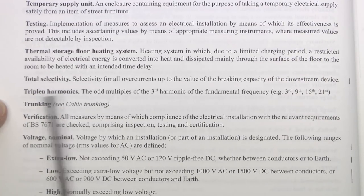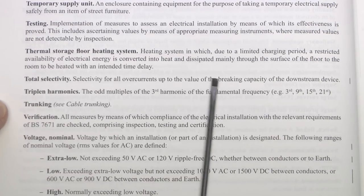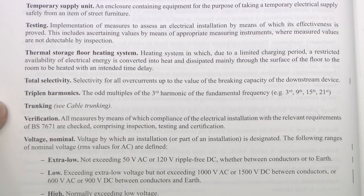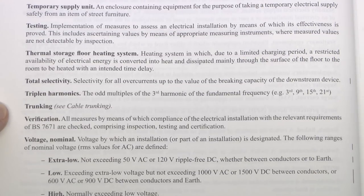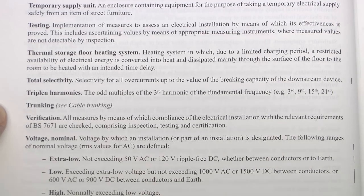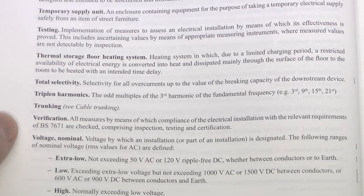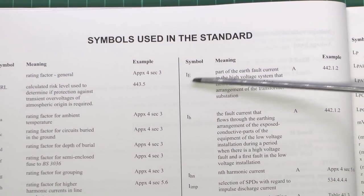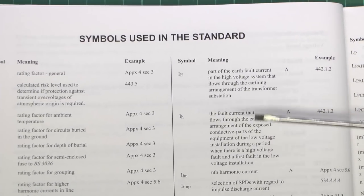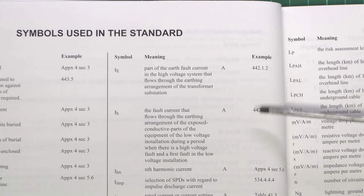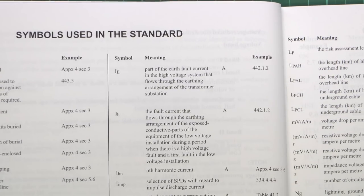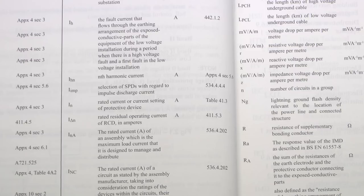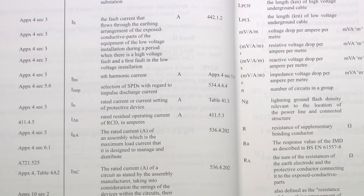And the final new one is Total Selectivity, which is selectivity for all overcurrent up to the value of the breaking capacity of the downstream device — compare that with Partial Selectivity which we saw on the previous page. And again, it fits in with the whole idea that it was called Discrimination before and now it's called Selectivity instead. Now that's it for the actual definitions themselves. There are a few changes within the symbols section, but most of these just refer to regulation numbers that have been renumbered, so the actual definitions are pretty much the same.